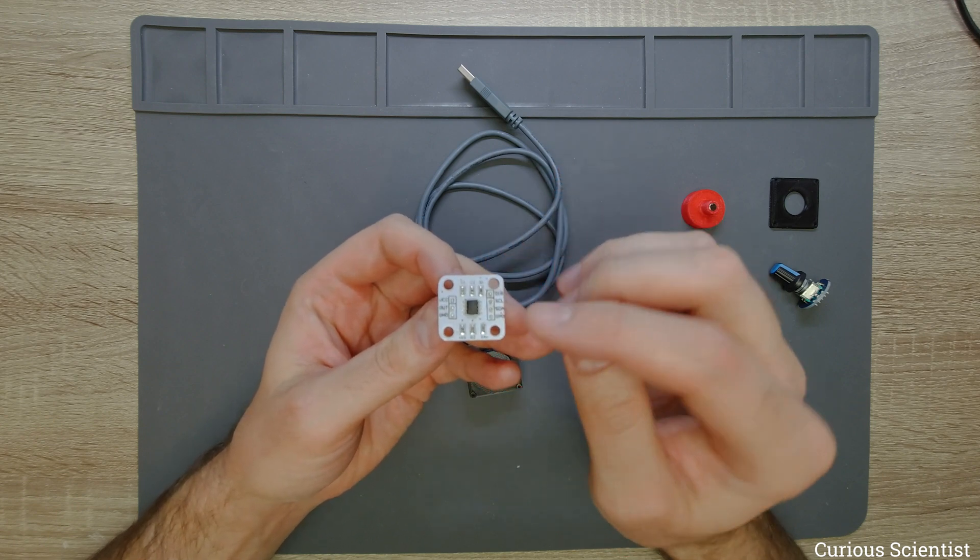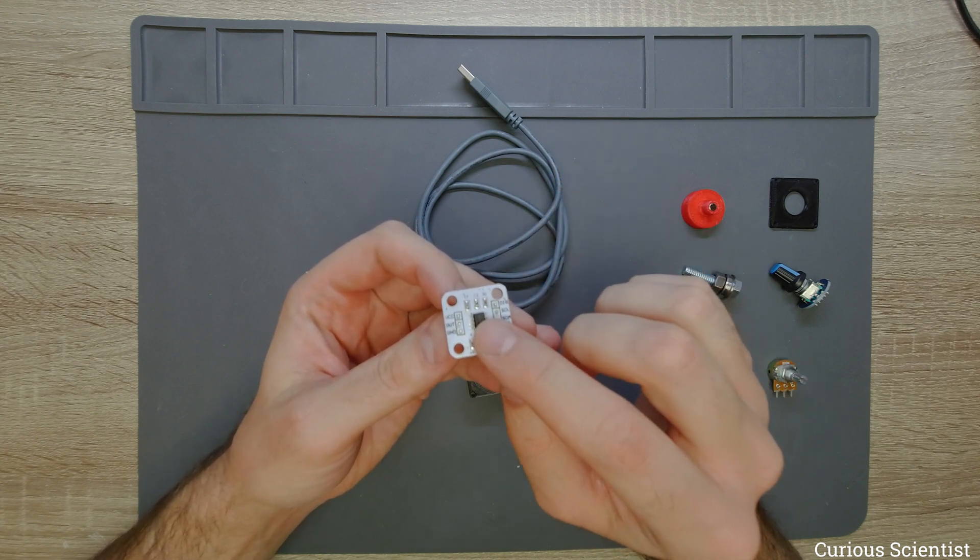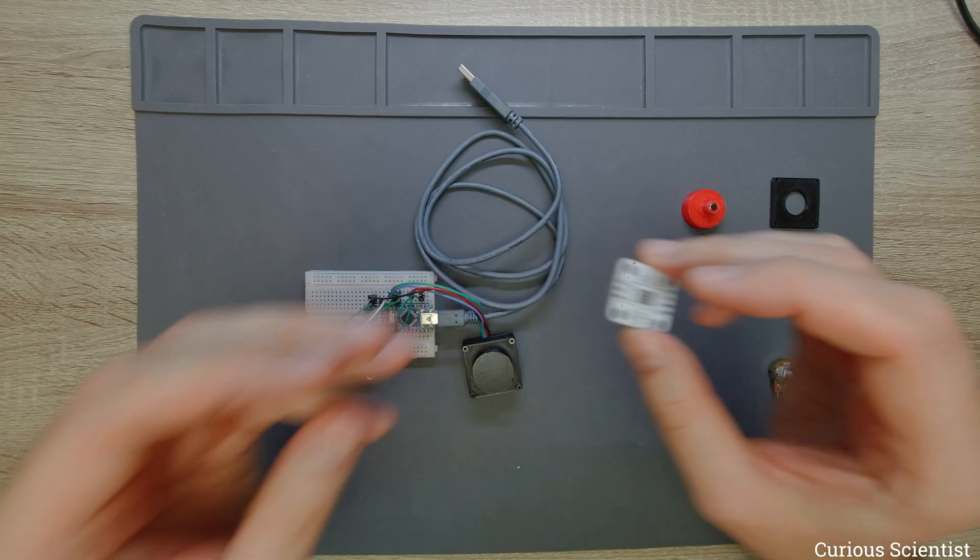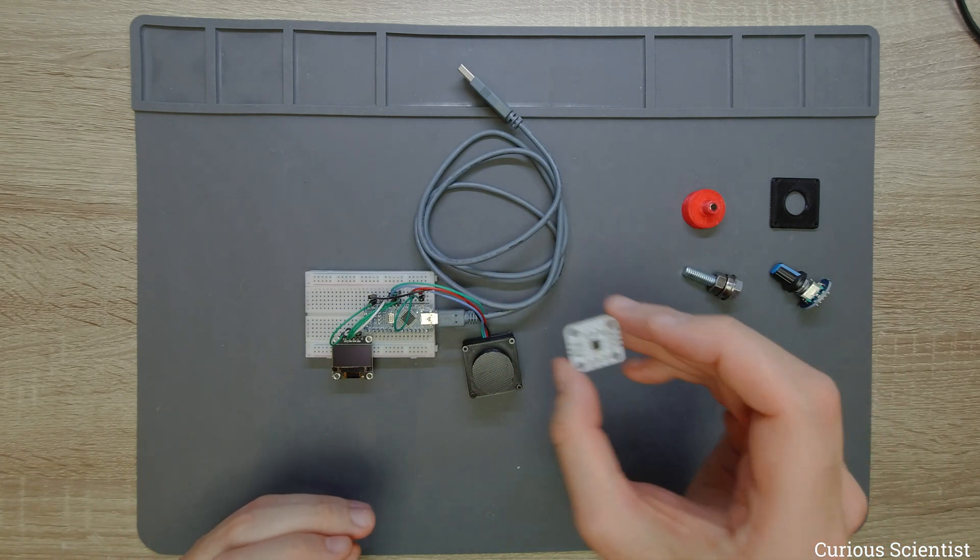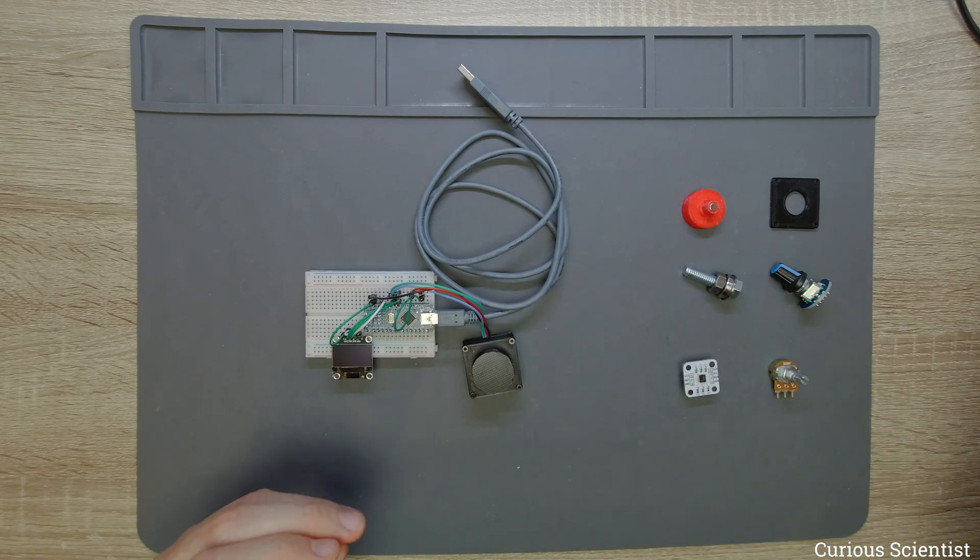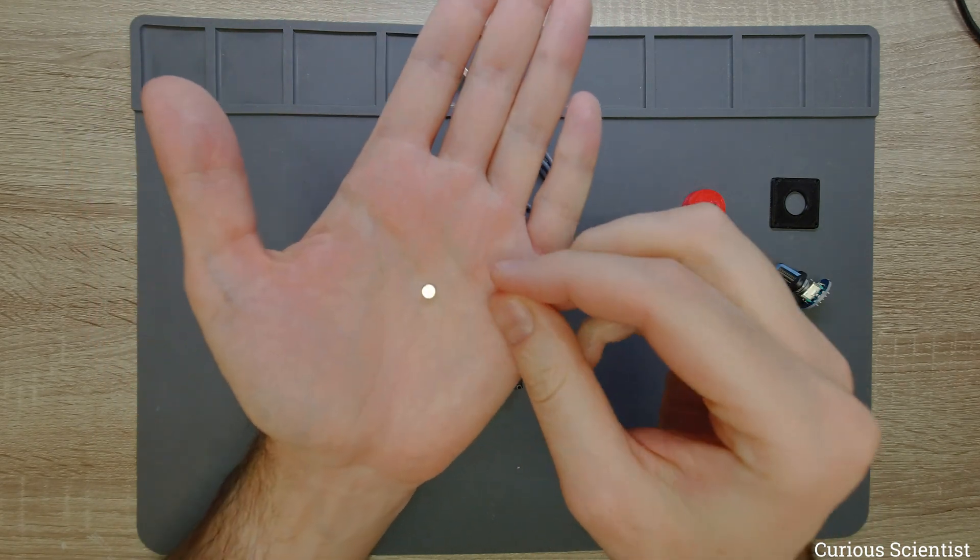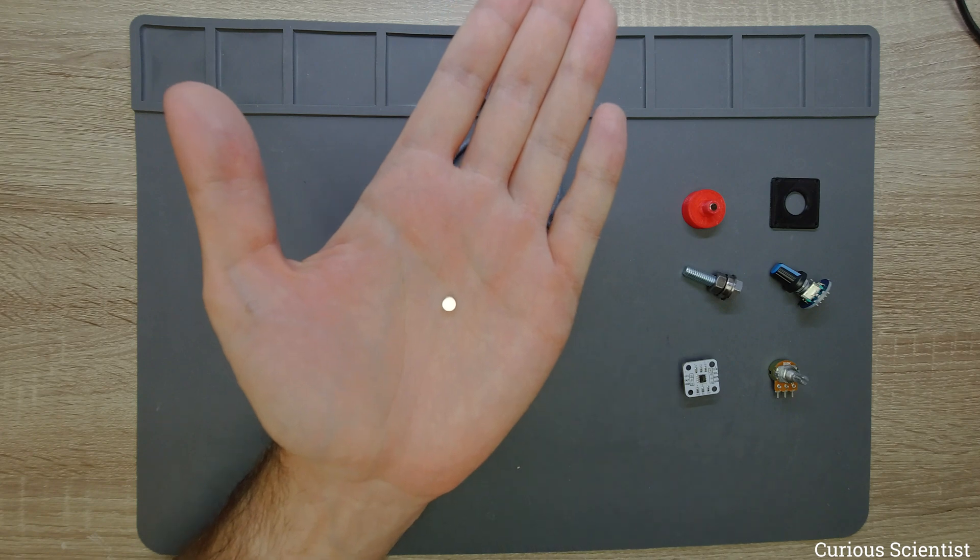Basically you have to put a magnet above this chip and rotate it. And the tricky part about the chip is that it requires a special kind of magnet, and that is this guy here, which is a diametrically magnetized magnet.